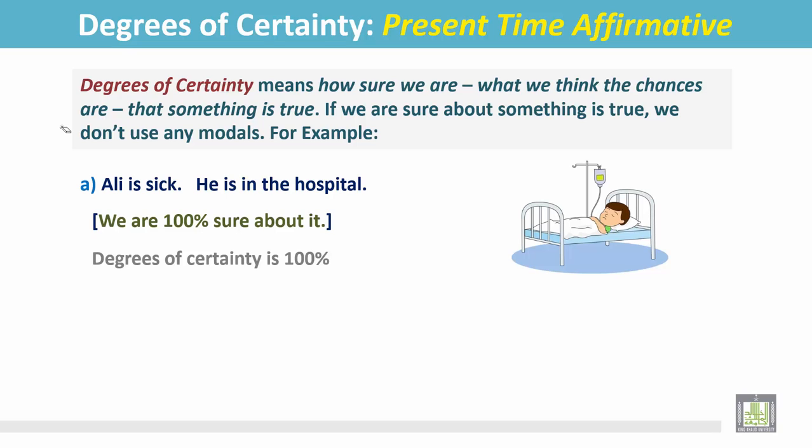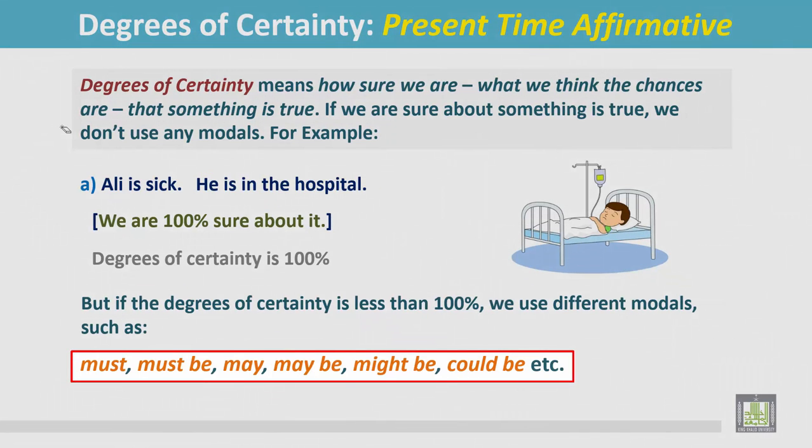Degrees of Certainty is 100%. But if the Degrees of Certainty is less than 100%, we use different modals such as must, must be, may, maybe, might be, could be, etc.